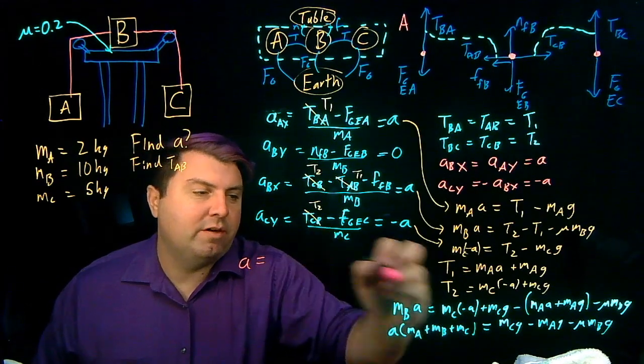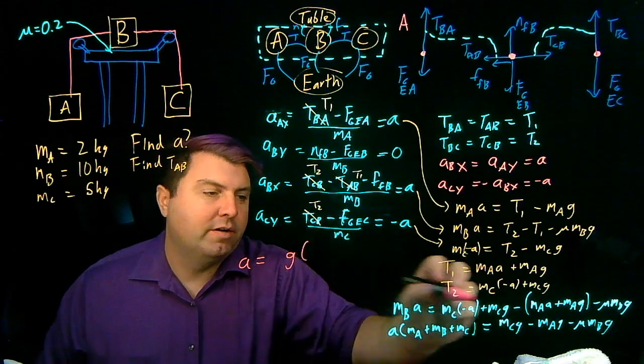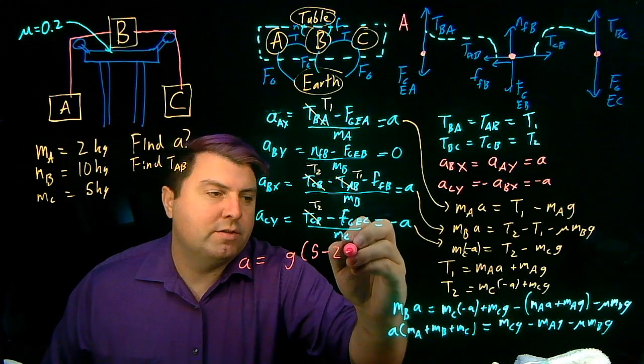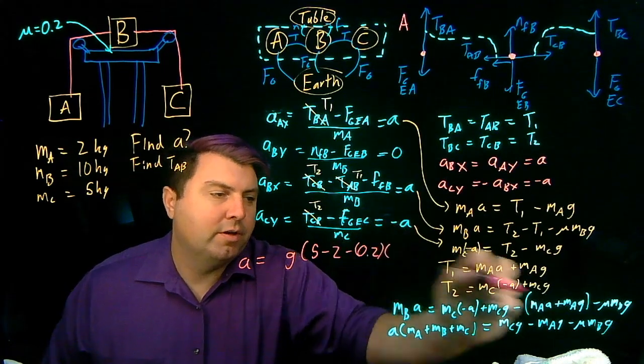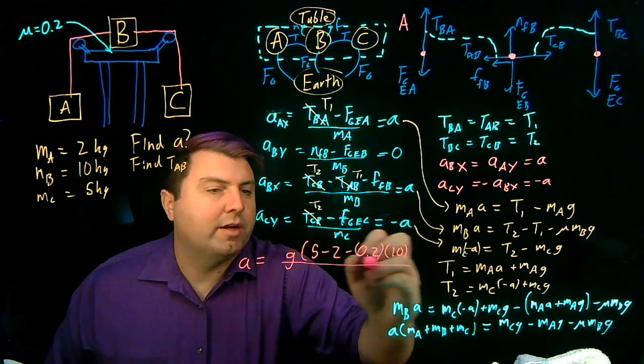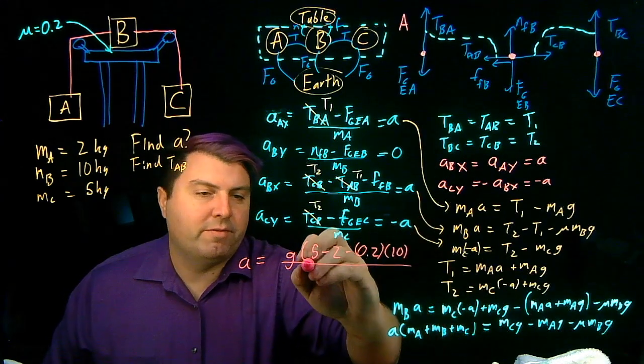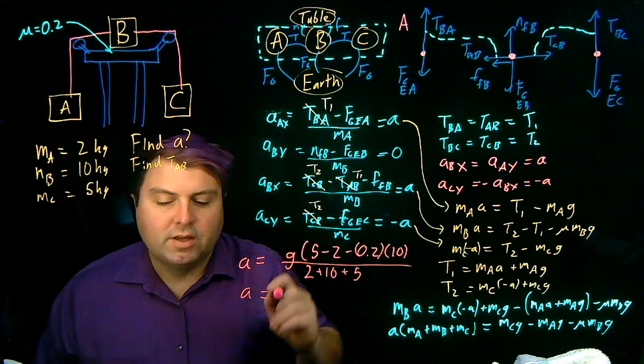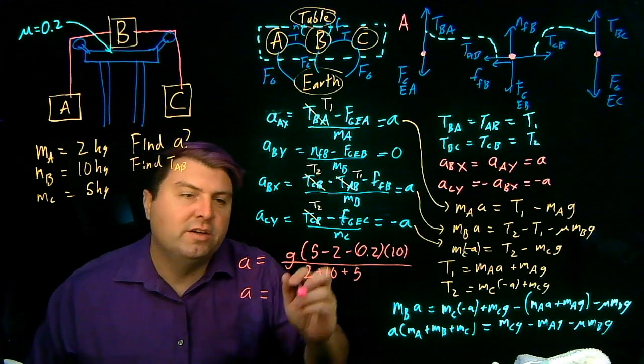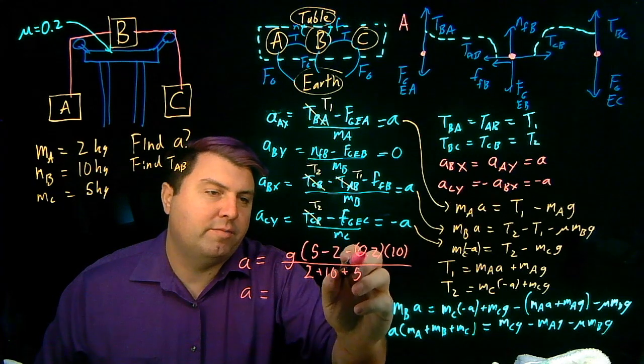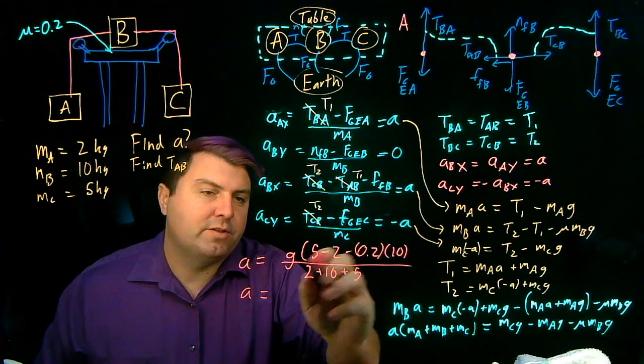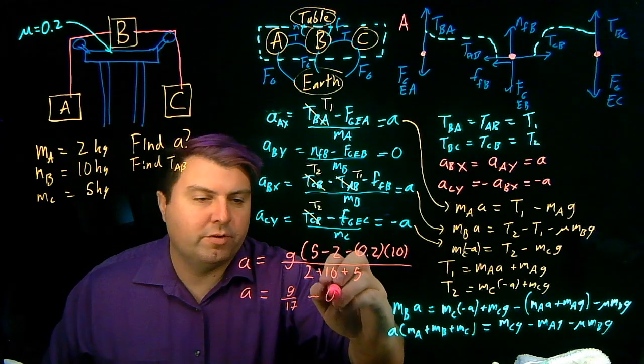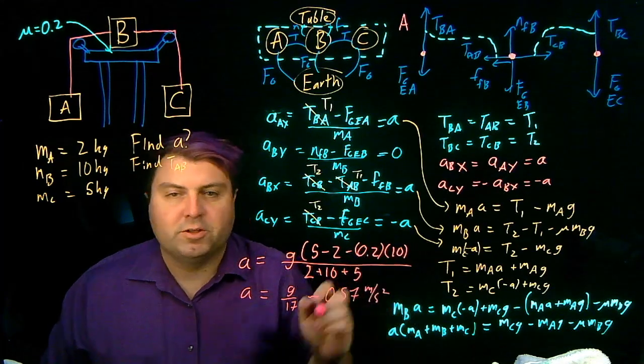Our A is going to be, we have G as a term here. MC is 5, MA is 2, mu is 0.2, MB is 10. And then we're dividing by the sum of them, so 2 plus 10 plus 5. So then our acceleration is going to be G times 5 minus 2 is 3, minus 0.2 is 1. So 5 minus 2 minus 2 is 1 over 17, G over 17, which is roughly 0.57 meters per second squared.